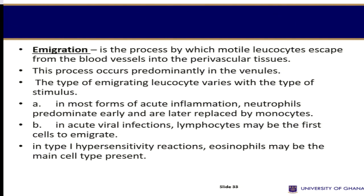The next step is emigration, where the cells actively move through the wall of the vessel from the intravascular compartment to the extravascular compartment. This process occurs in venules. Depending on the type of stimulus, various white cells can move out — in acute inflammation the usual one is the neutrophil, but in some conditions monocytes may emigrate, in viral infections lymphocytes usually emigrate, and in type 1 hypersensitivity reactions eosinophils may be the main cell that emigrates.